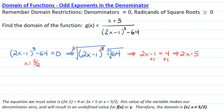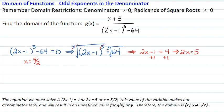This value of the variable makes our denominator equal to zero and it will result in an undefined value for the function. Therefore, the domain will be all real numbers except for 5/2.